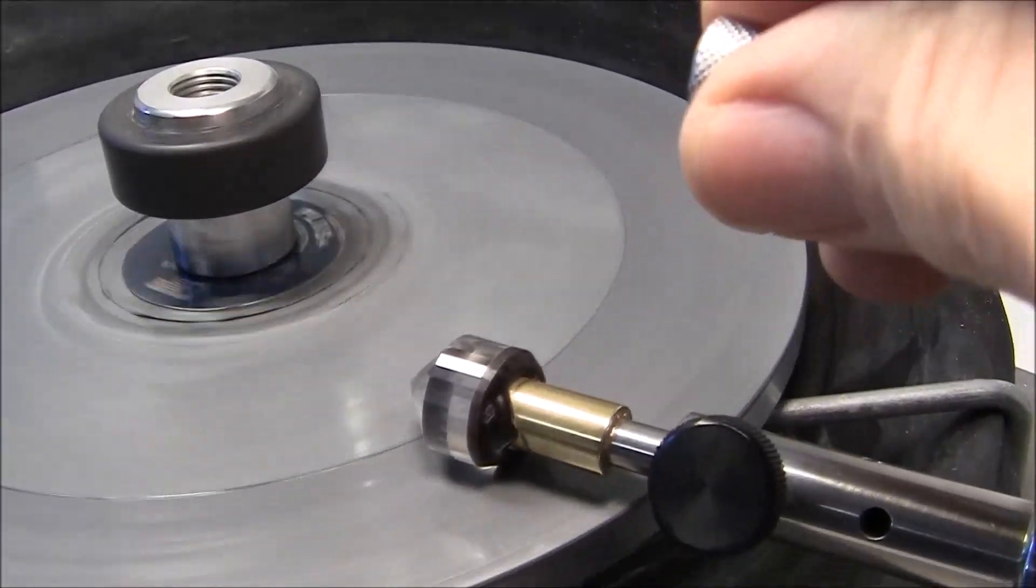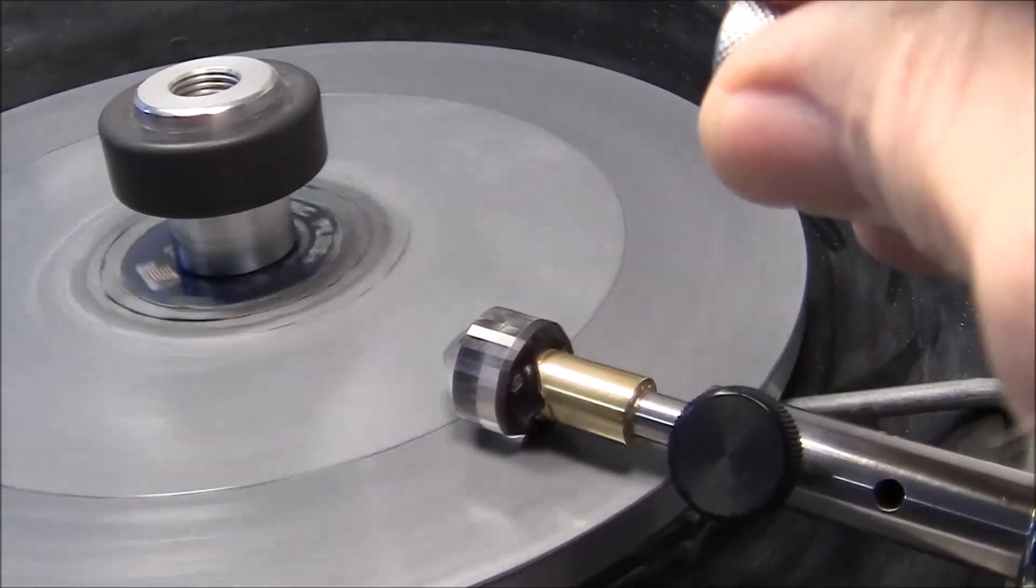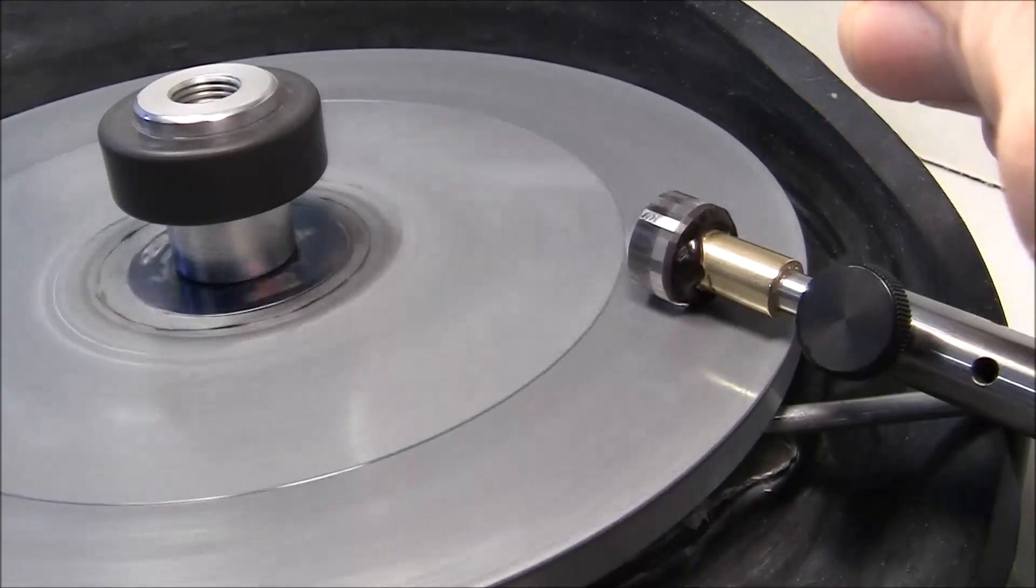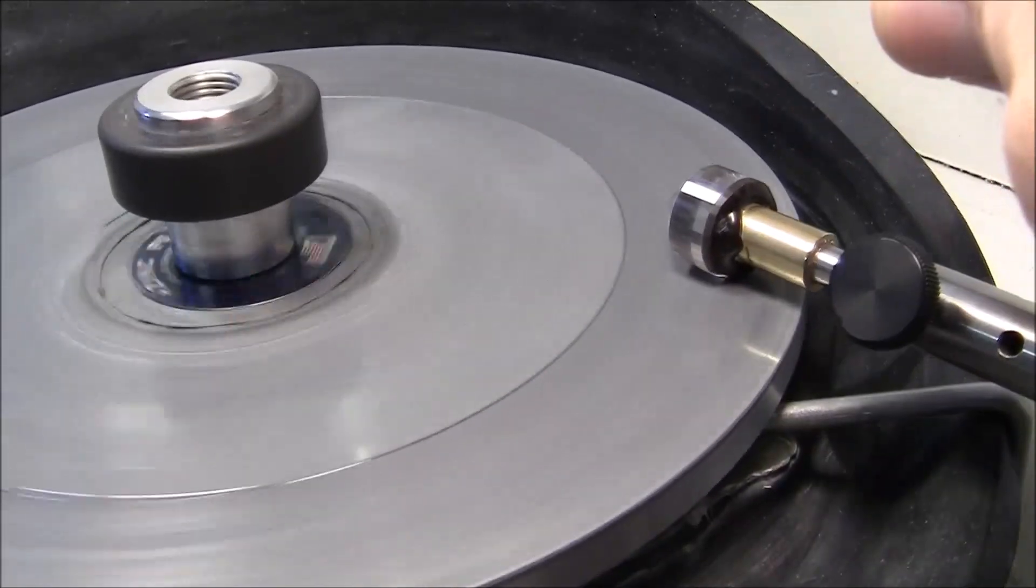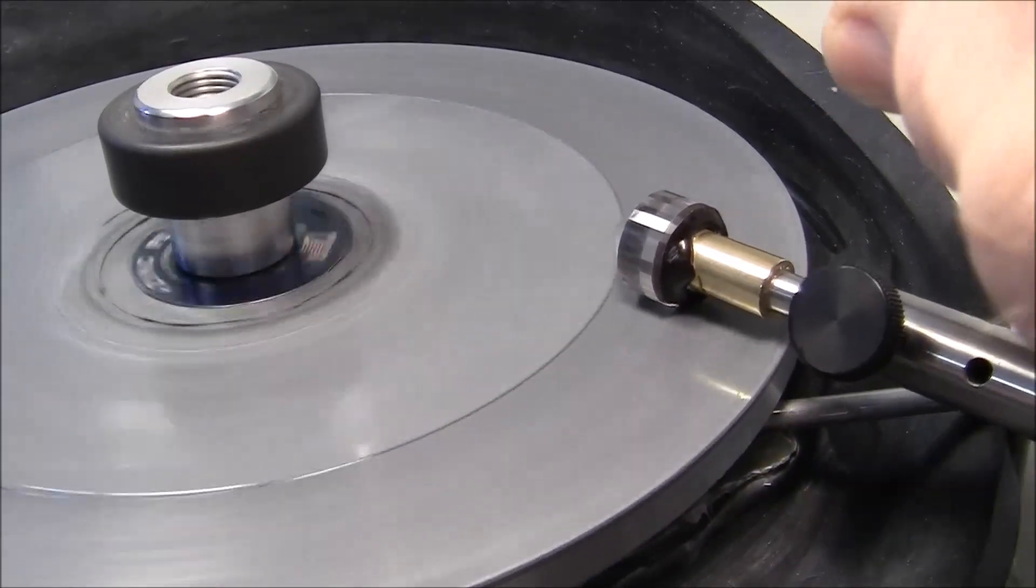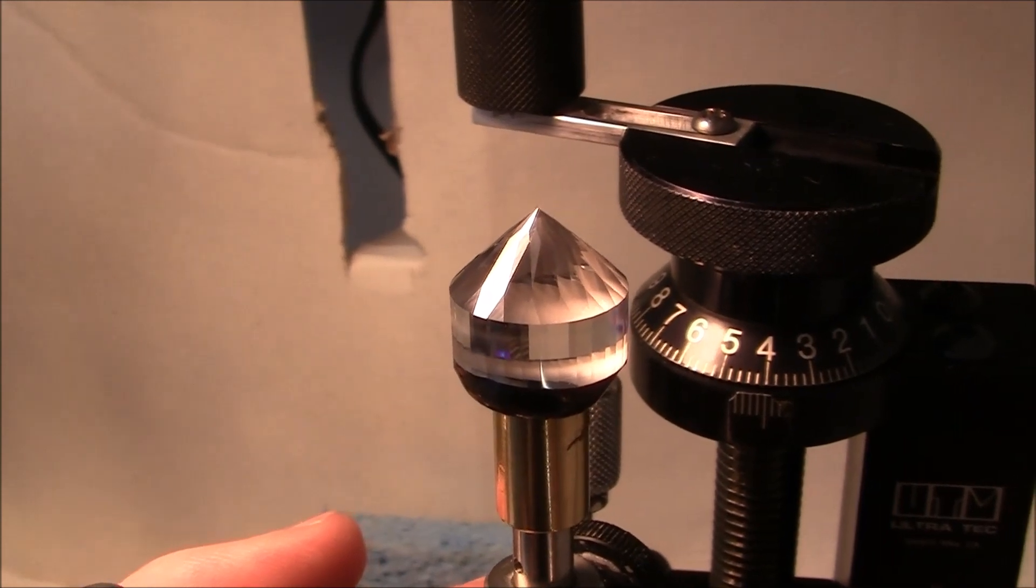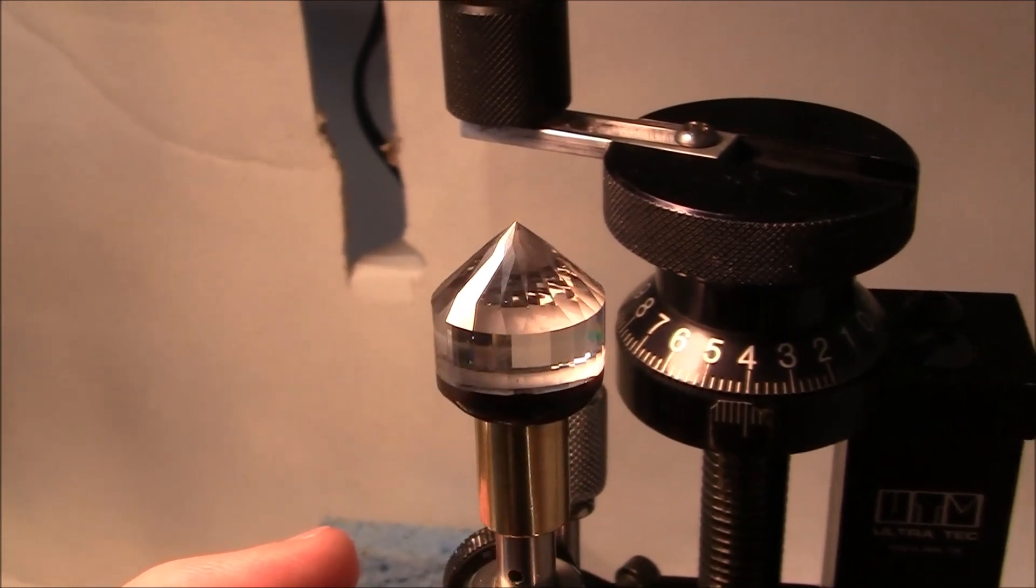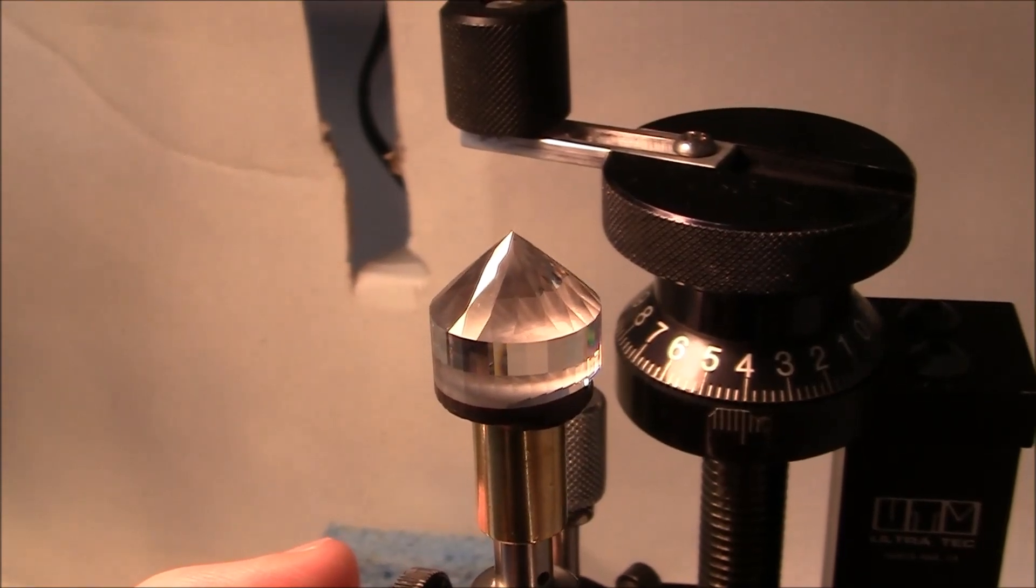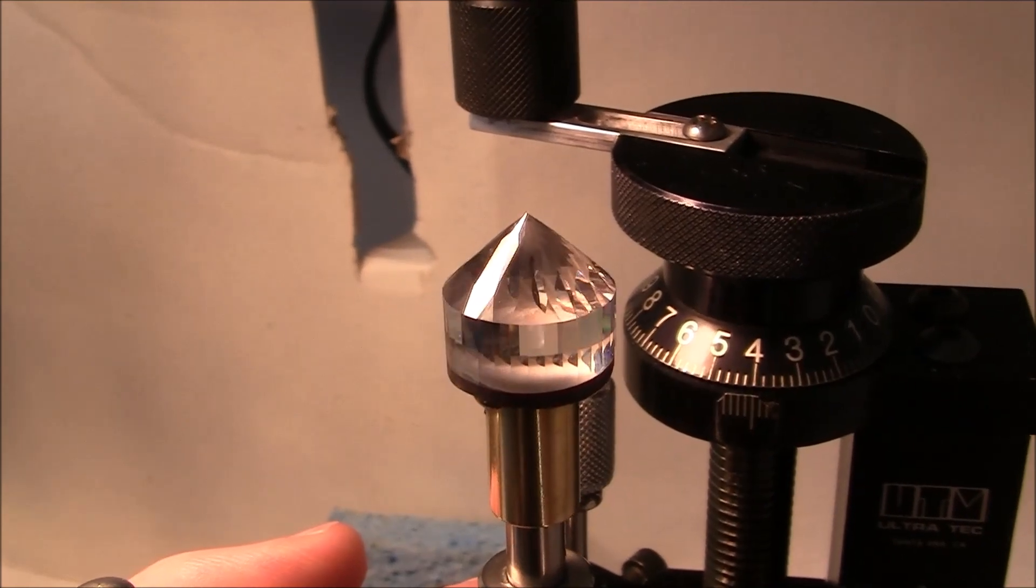I'm pre-polishing the girdle facets now. I'm starting the pre-polishing now with the 8,000 lap. So I've gone from 3000 to 8,000 and I've done the first set of facets.